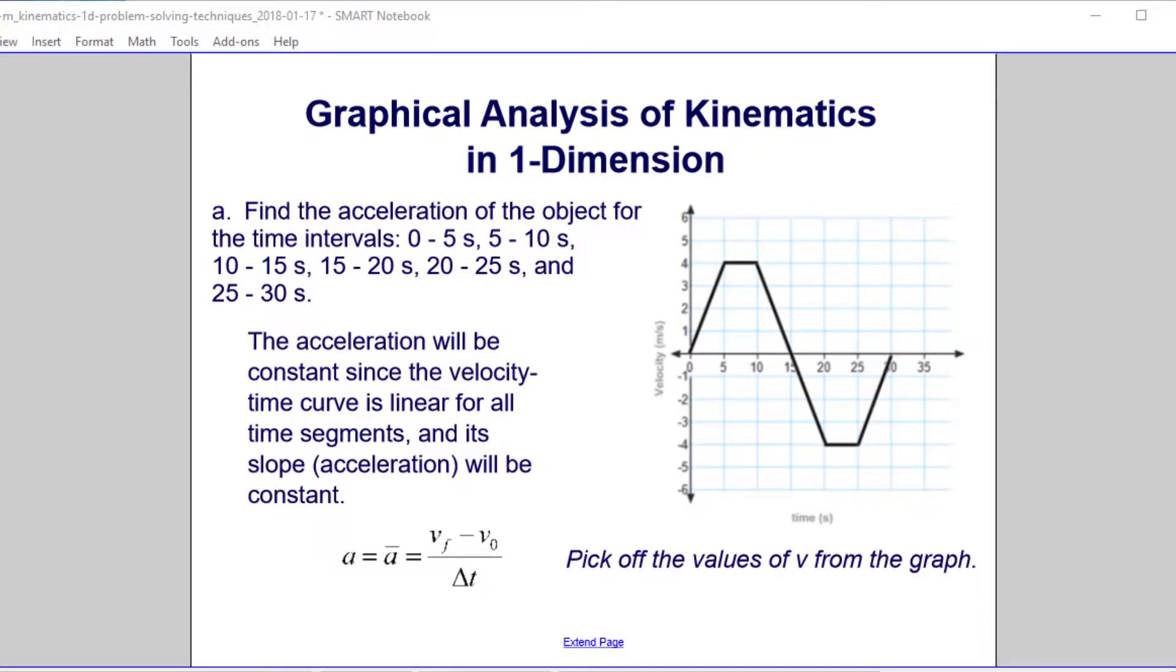Find the acceleration of the object for these various time intervals. The first thing we're going to notice is it will be constant because if you look at the velocity time graph, all the pieces are straight lines, and the slope of a straight line is always a constant. What we're going to do is pick off the velocities for every time interval.